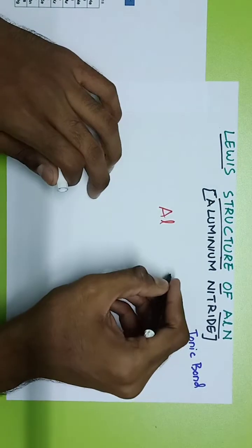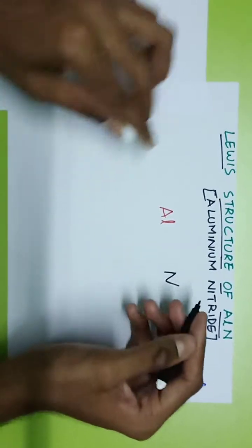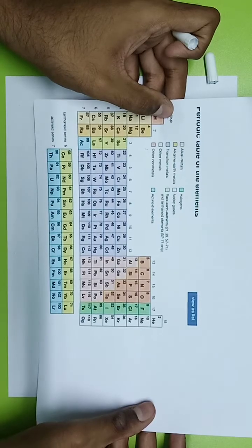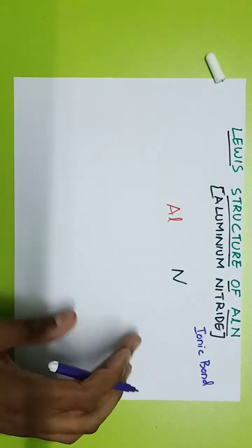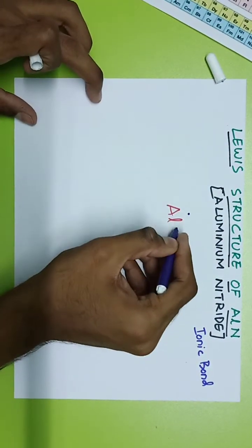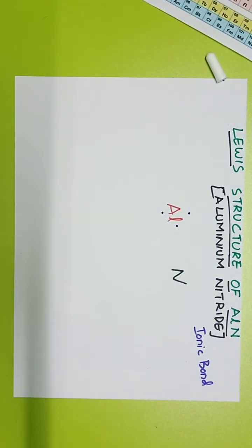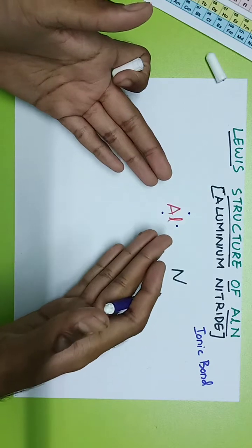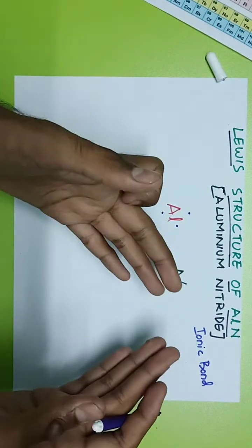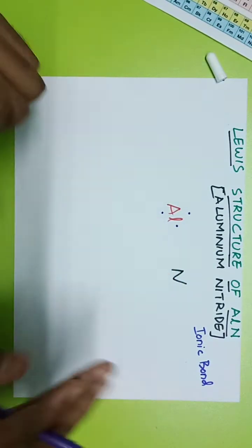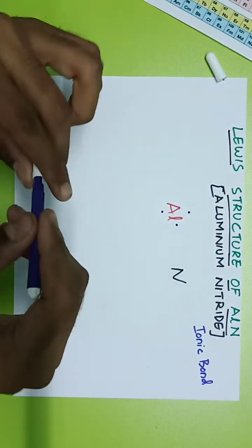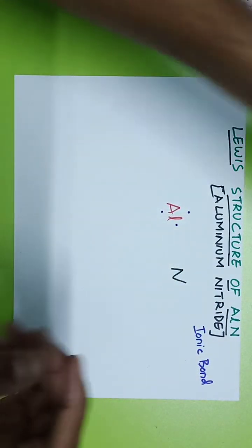Aluminum, which is in group 13, will have three valence electrons — exactly three, because group 13 elements have three valence electrons. Nitrogen, being in group 15, will have five valence electrons.